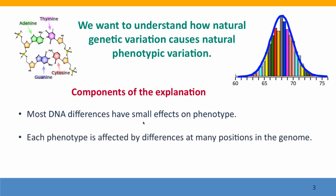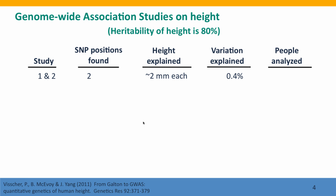As a corollary to this, each phenotype is affected by differences at many different positions in the genome — not just at different positions within a single gene, but at many different genes. We can think about this in the context of our discussion of human height. We know that the heritability of height is 80%, meaning most of the differences in height between different people are caused by differences in their genes.